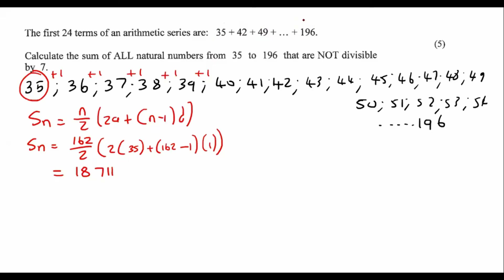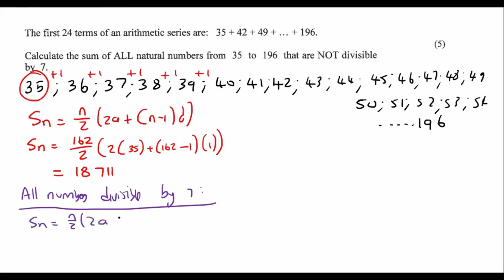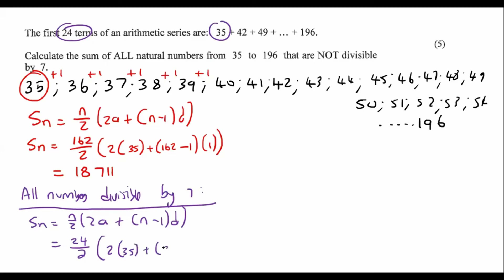Let's add up all the numbers divisible by seven. Sn equals n over 2 times (2a plus (n minus 1) times d). They've told us there are 24 terms, so n equals 24, a equals 35, and the common difference is plus seven — can you see we're adding seven each time? Typing this into the calculator gives us 2,772.